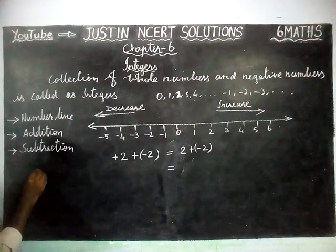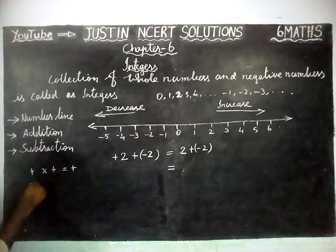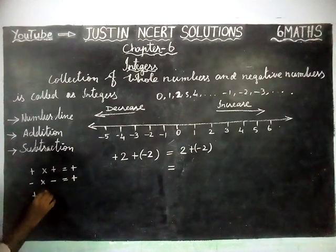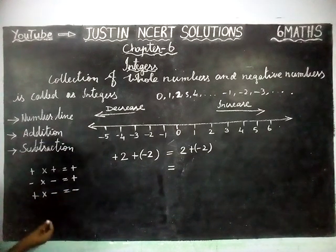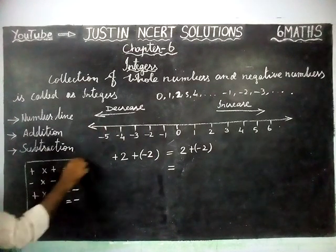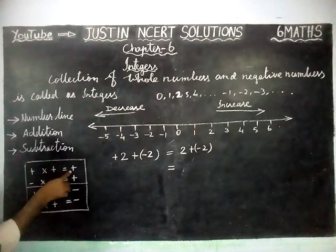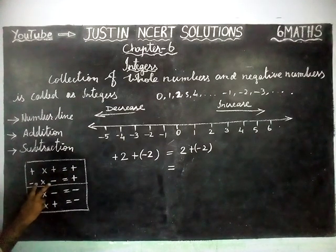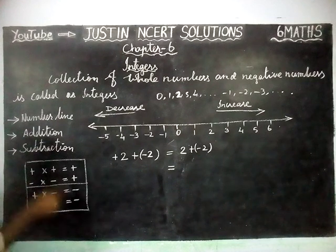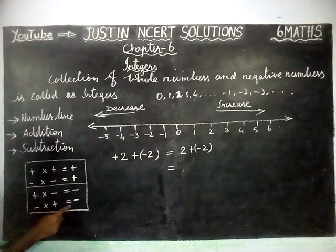The important rule in integers is: when multiplying, plus into plus gives plus, minus into minus gives plus, plus into minus gives minus, and minus into plus gives minus. If the two signs are the same, the answer is plus. If the signs are different, the answer is minus.